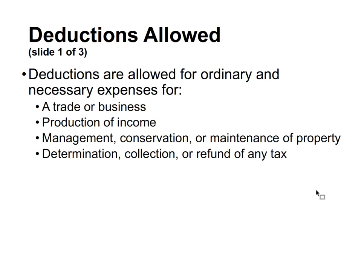Regarding deductions: because an estate or trust is like a general taxpayer, most individual rules apply, but with some adjustments. Deductions are allowed for ordinary and necessary expenses — for trade or business (Section 162), production of income (Section 212), management, conservation, or maintenance of property, and determination, collection, or refund of any tax.